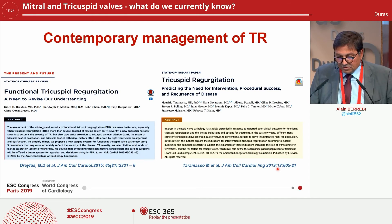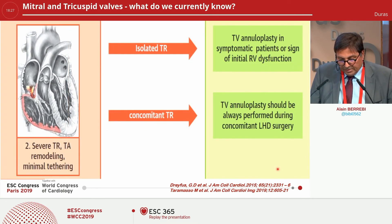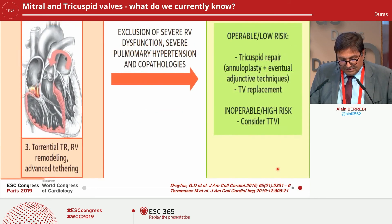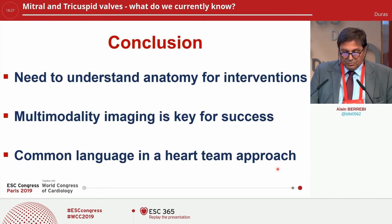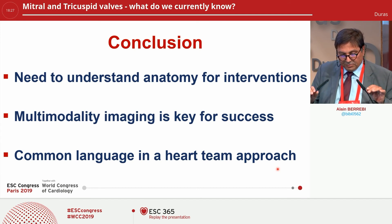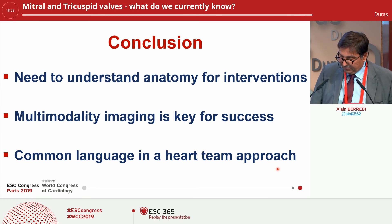Finally, the last slide is a contemporary management of TR based on two very important papers. We have grade one with isolated TR and concomitant TR with surgery. Grade two with isolated TR and concomitant TR with surgery. And grade three with torrential TR and large LV remodeling, which is considered as a transcatheter option — but maybe this stage is too late. In conclusion, we need to clearly understand anatomy for intervention. Multimodality imaging is key for success of implantation in a common language with a heart-team approach. Thank you very much.